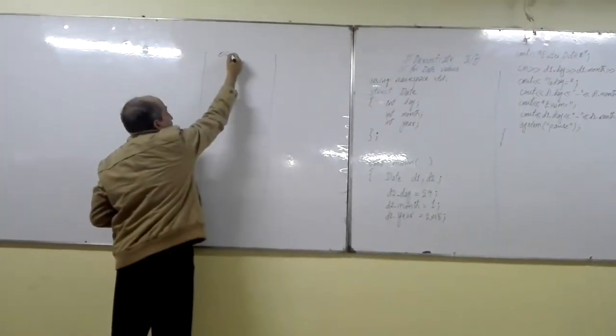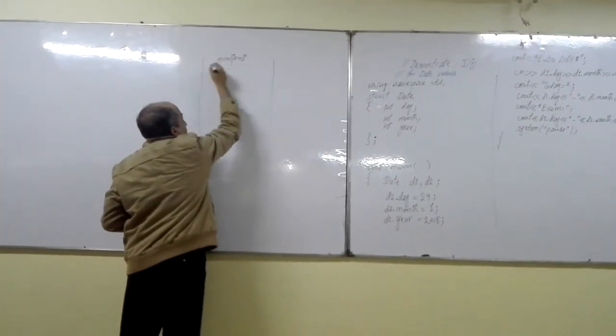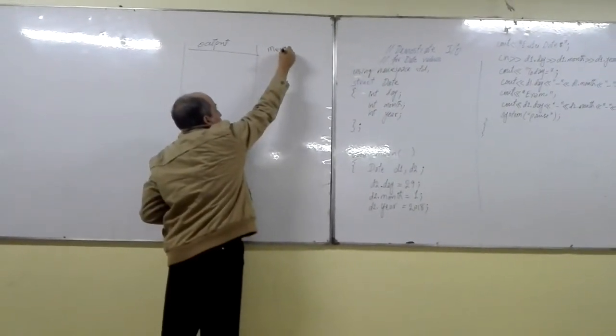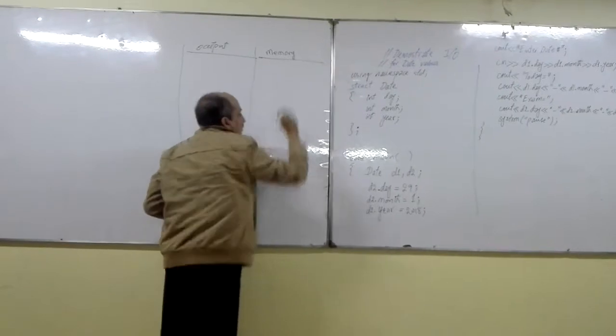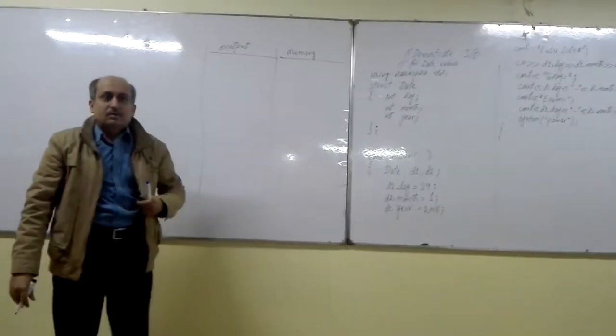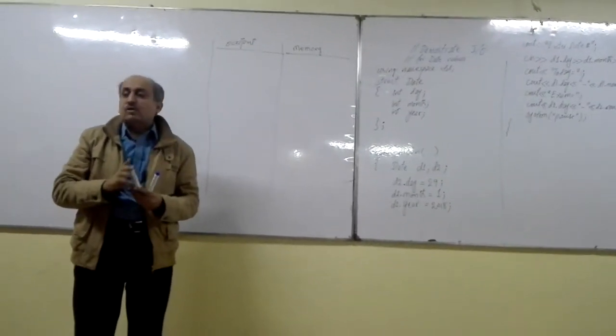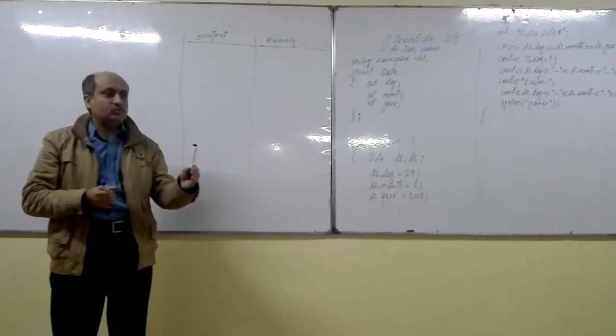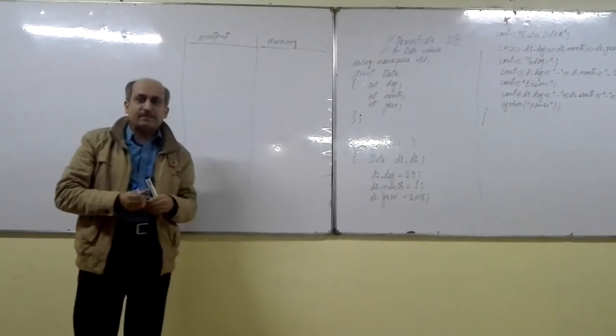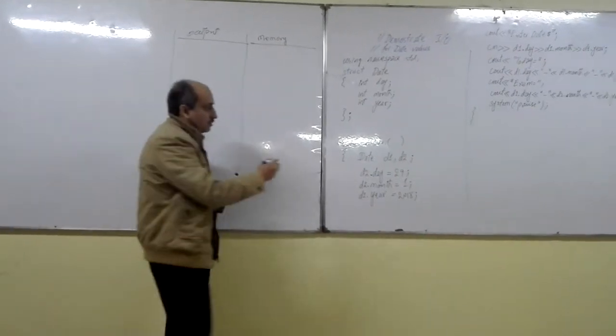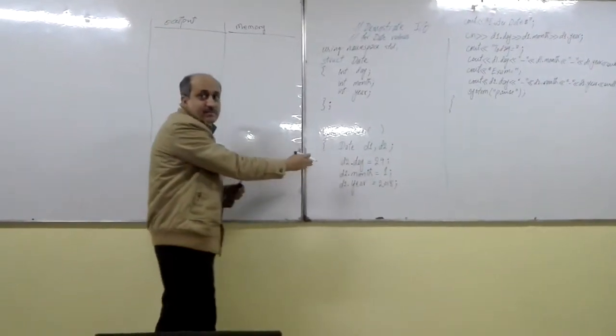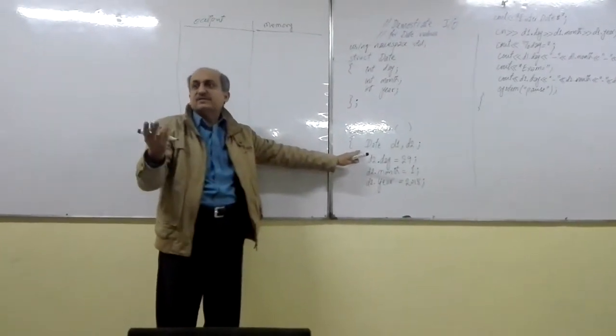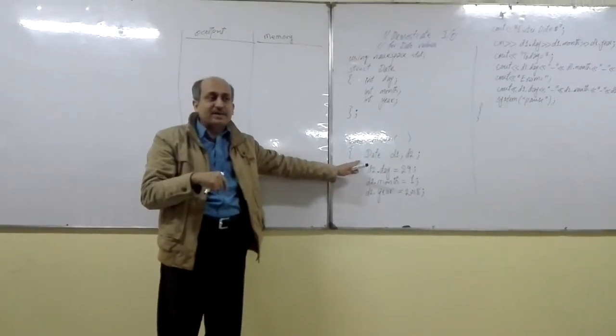This is the output portion and this is the memory part. Control of execution will first jump over to the main program. Now this is the main program, and in the first line, in the first statement, two variables of date type are being created.